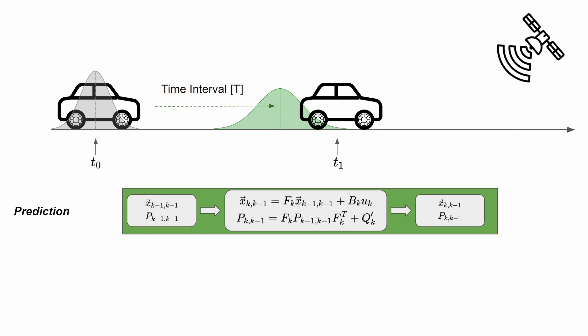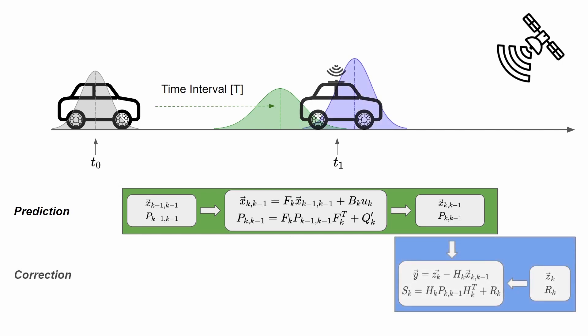This continues until we receive a new measurement from a physical sensor, which will do the correction — and this is the next step. The measurement sensor in our example is a GPS sensor, with an antenna that receives the GPS signal in order to identify the location of the car.